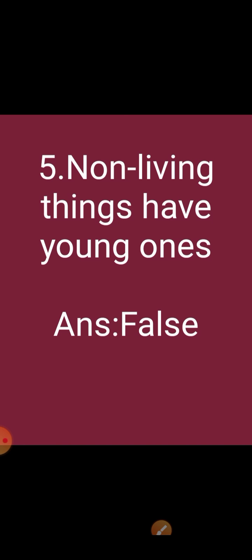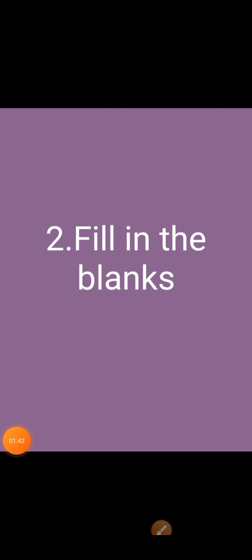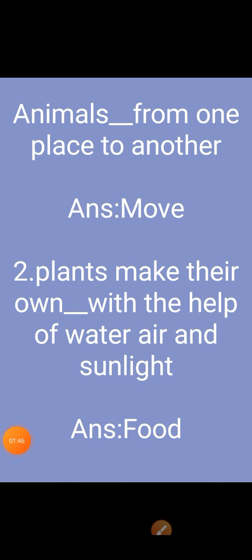Now, let's see some fill-in-the-blanks. First one: animals dash from one place to another. Answer is move — animals move from one place to another. Second question: plants make their own dash with the help of water, air and sunlight. Answer is food.